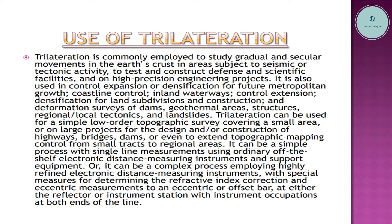Trilateration can be used for a simple low-order topographic survey covering a small area, or on large projects for the design and construction of highways, bridges, dams, or even to extend topographic mapping control from small tracks to regional areas. It can be a simple process with single line measurements using ordinary off-the-shelf electronic distance measuring instruments, or a complex process employing highly refined instruments with special measures for determining the refractive index correction and eccentric measurements.